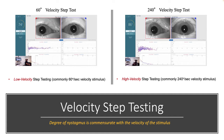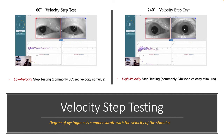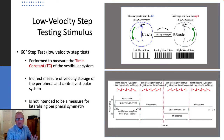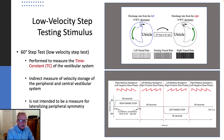Let's compare and contrast the two as to why we do a 60 and a 240 degree step test. During the low velocity step test, the chair abruptly accelerates to its target velocity of 60 degrees per second and stays there for about 60 seconds.